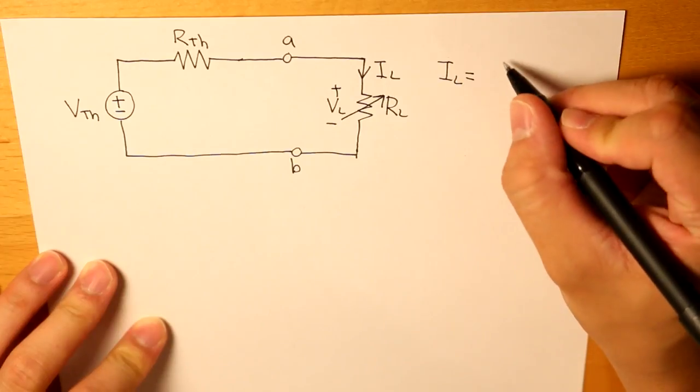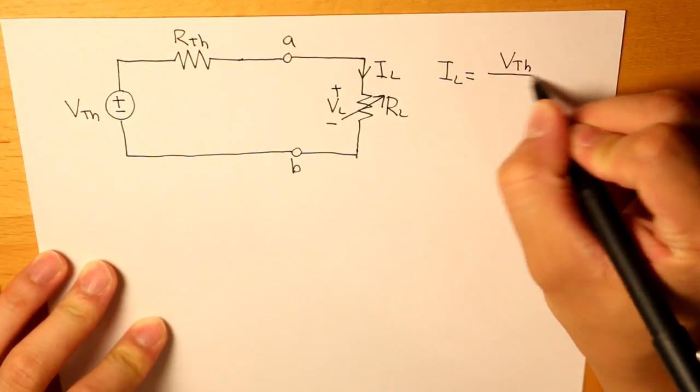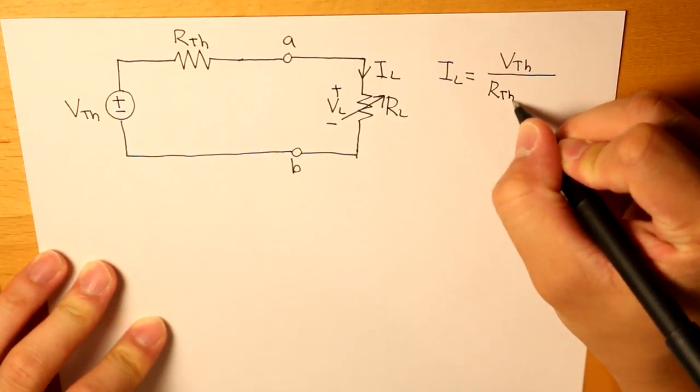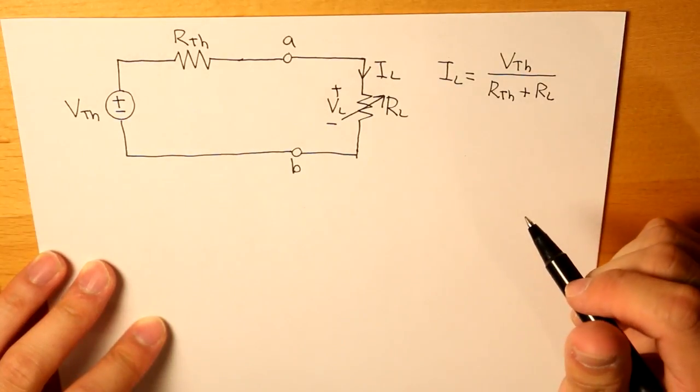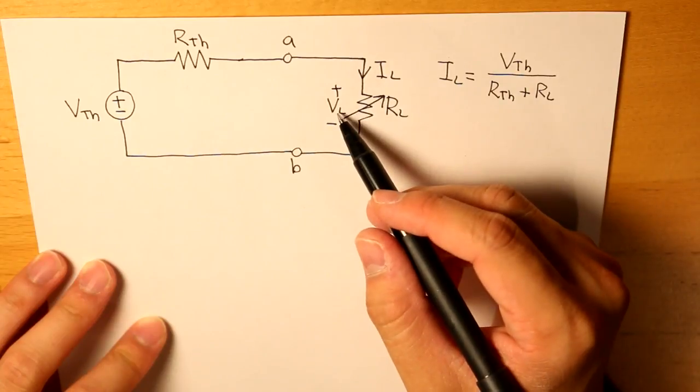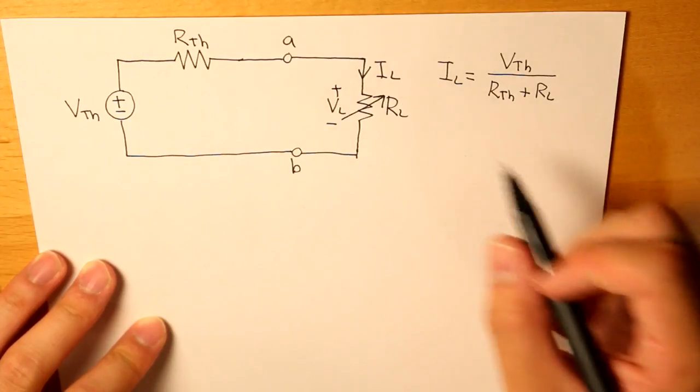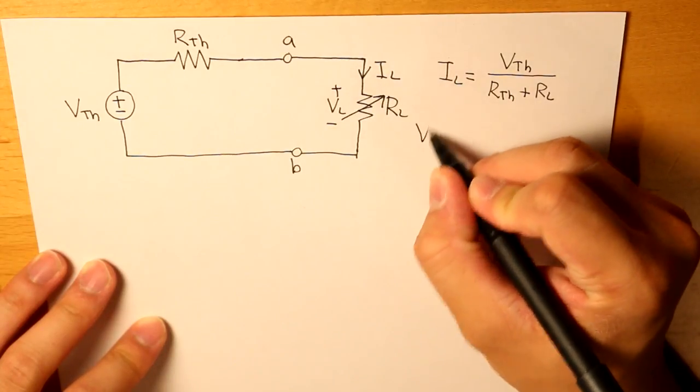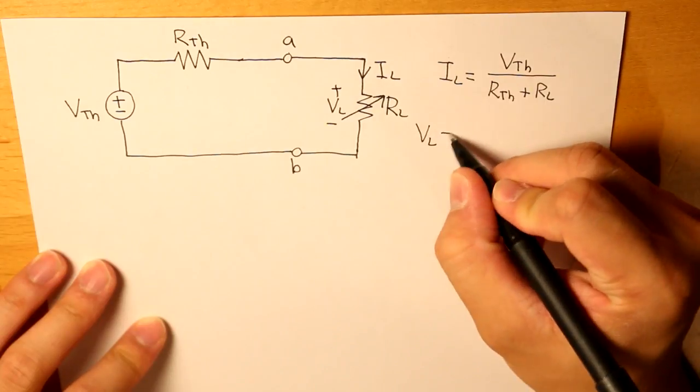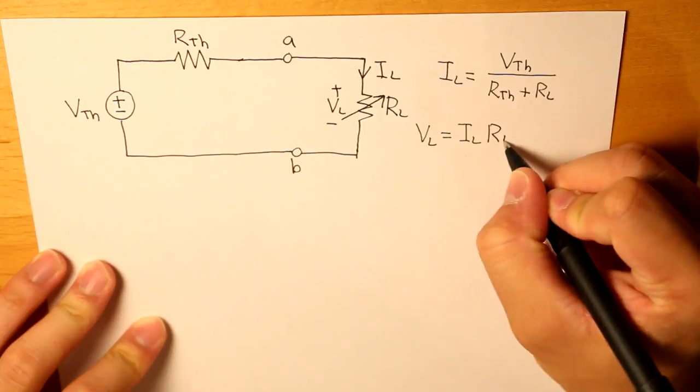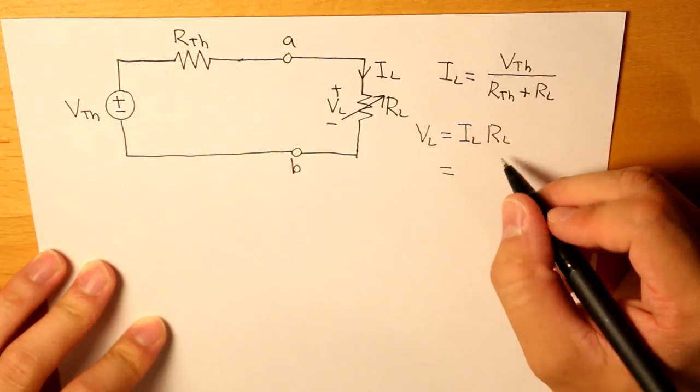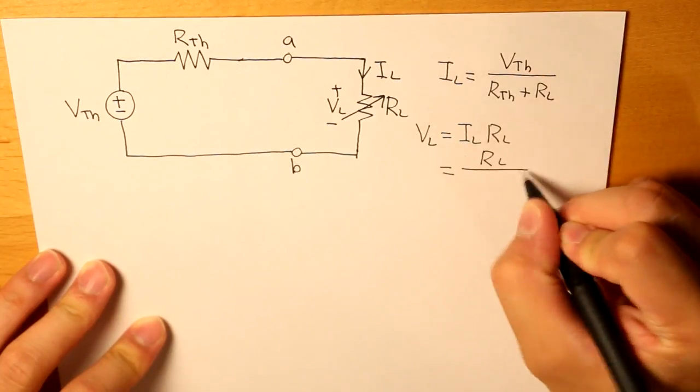VTH over RTH plus RL. And then if we want to find what VL is, it's pretty simple, just take Ohm's law. So that would be IL times RL, or that could be RL divided